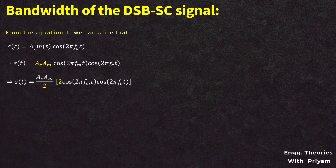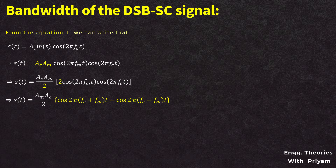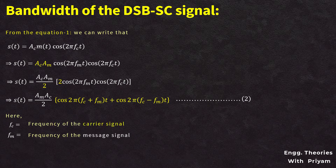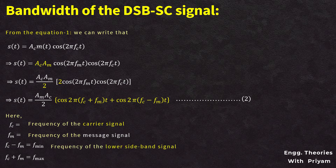In equation 2, FC is the frequency of the carrier signal and FM is the frequency of the message signal. The minimum frequency (FC − FM) is the frequency of the lower sideband, and the maximum frequency (FC + FM) is the frequency of the upper sideband.